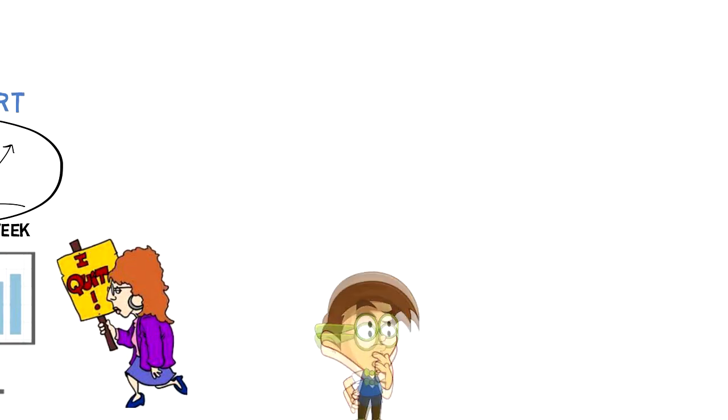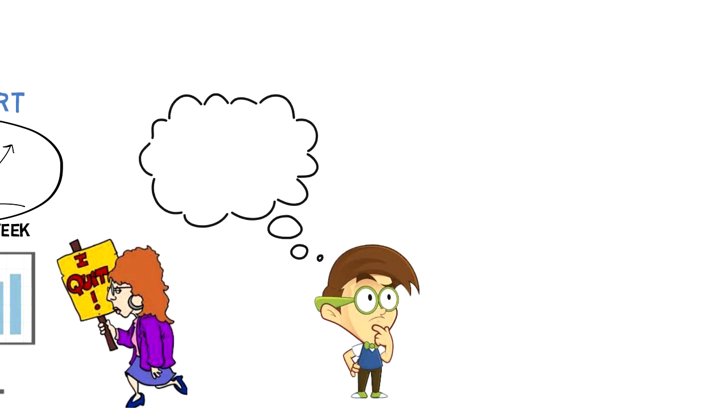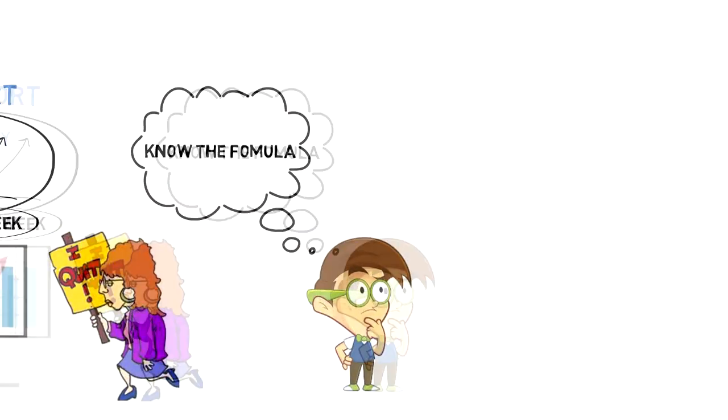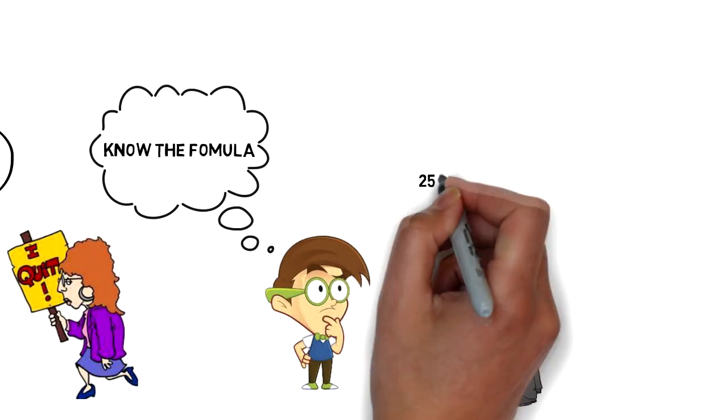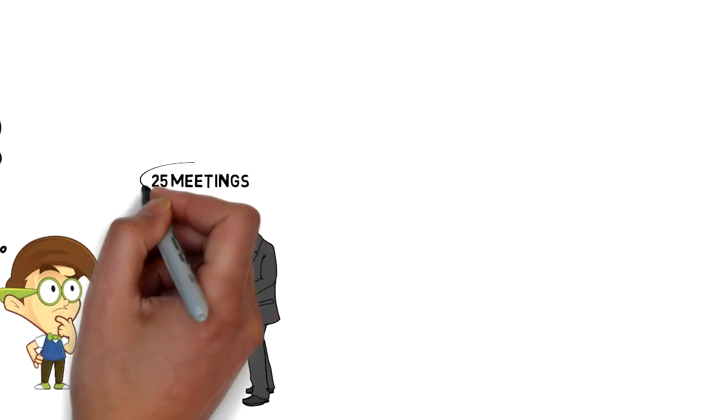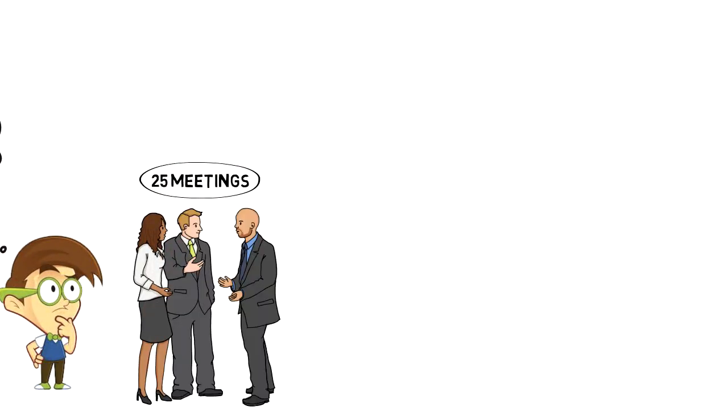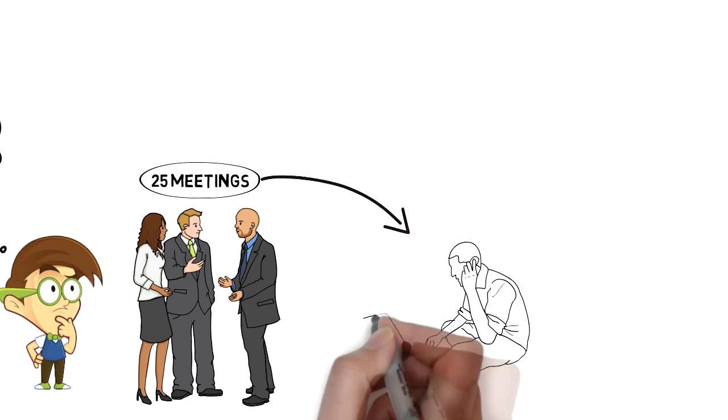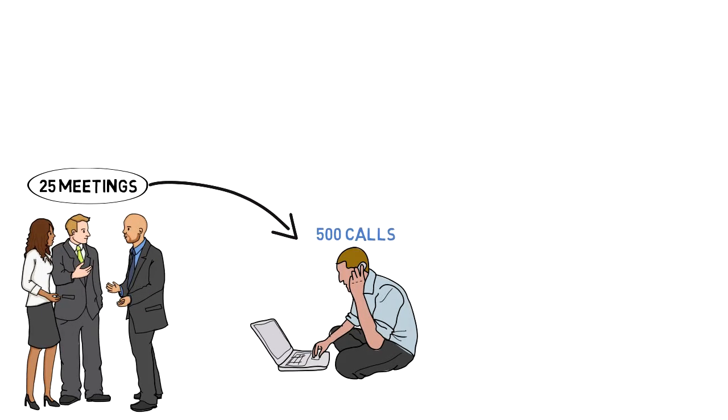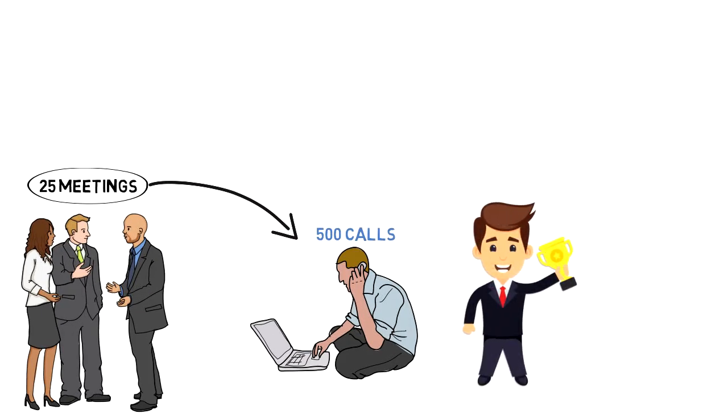So if you want to make five sales per week then you have to work the numbers backwards. You already know what the formula is. So in order to get one sale you had to arrange five meetings. So to get five sales you'll need to arrange 25 meetings from which 10 will be cancelled anyway. To arrange 25 meetings you know that 100 phone calls will not be enough. So instead of 100 calls you have to make 500 calls. So there you go. Now you just have to execute with 10x actions and you will achieve your goals week after week.